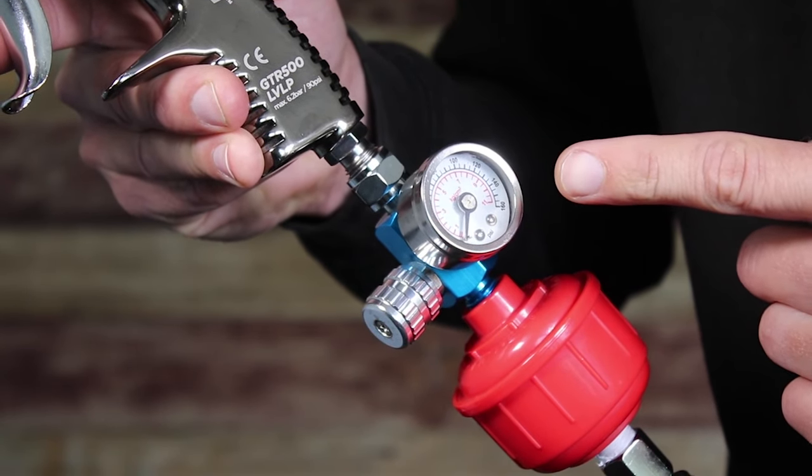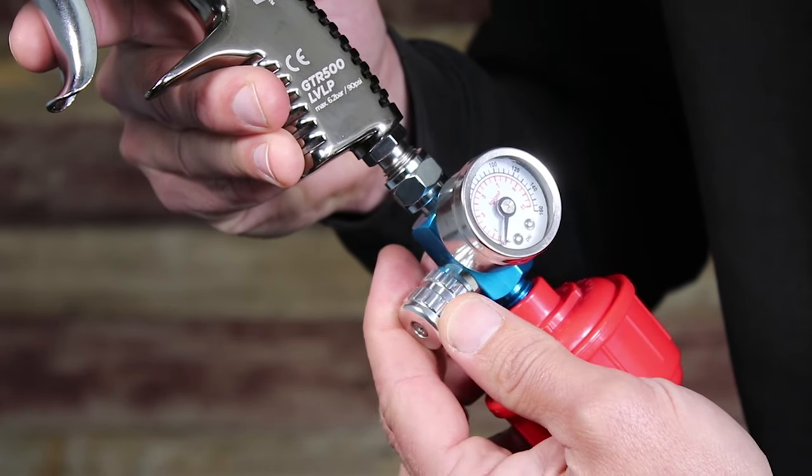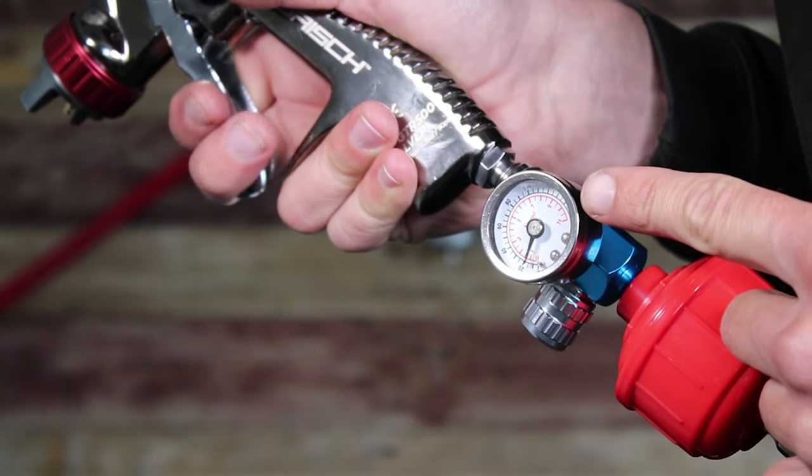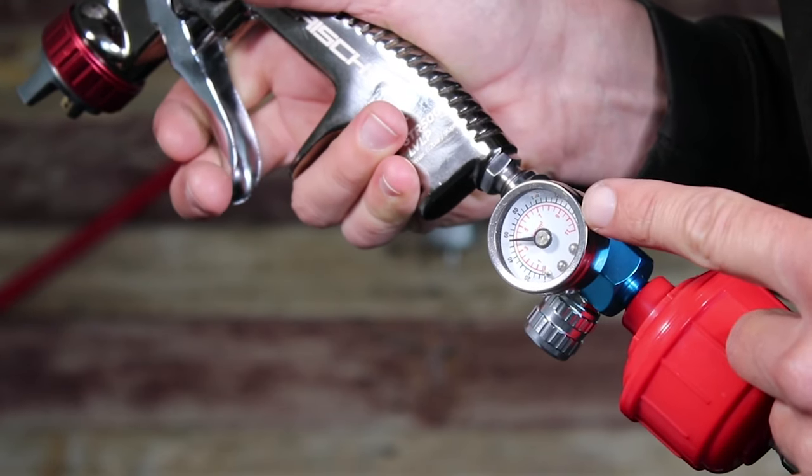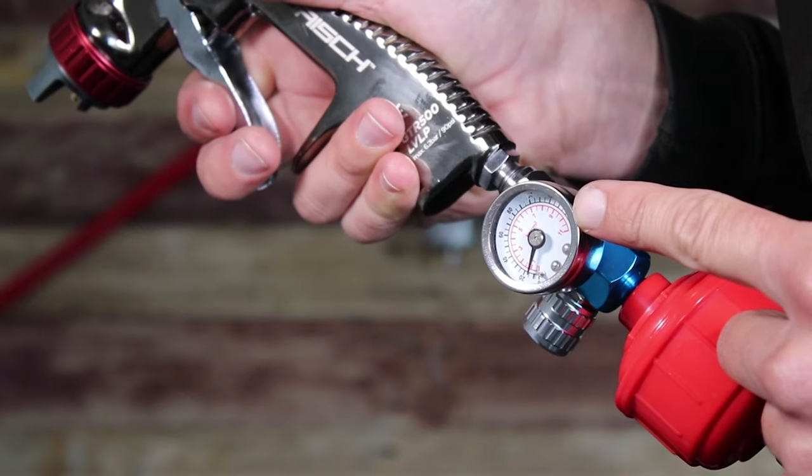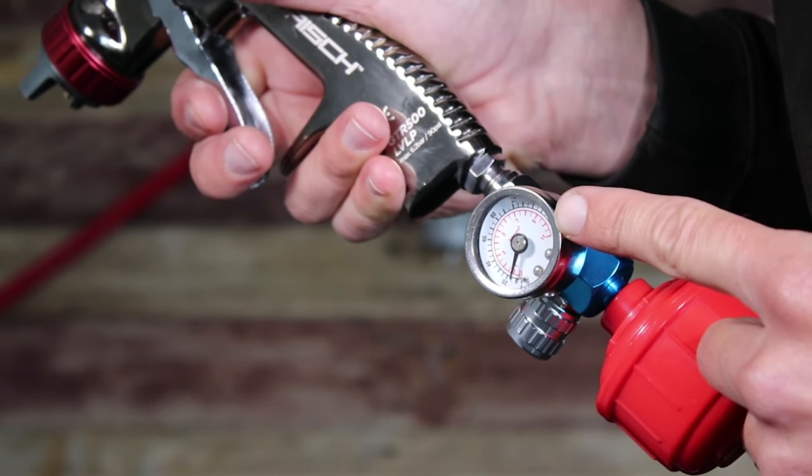There are two air pressure scenarios that are important here, namely static pressure and working pressure. Static pressure is the pressure which you will see on the gauges when there is no work taking place and the trigger on the spray gun is not depressed.